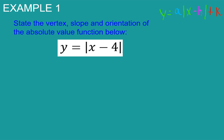All right, in this example, it wants us to state the vertex, slope, and orientation of the absolute value function below.